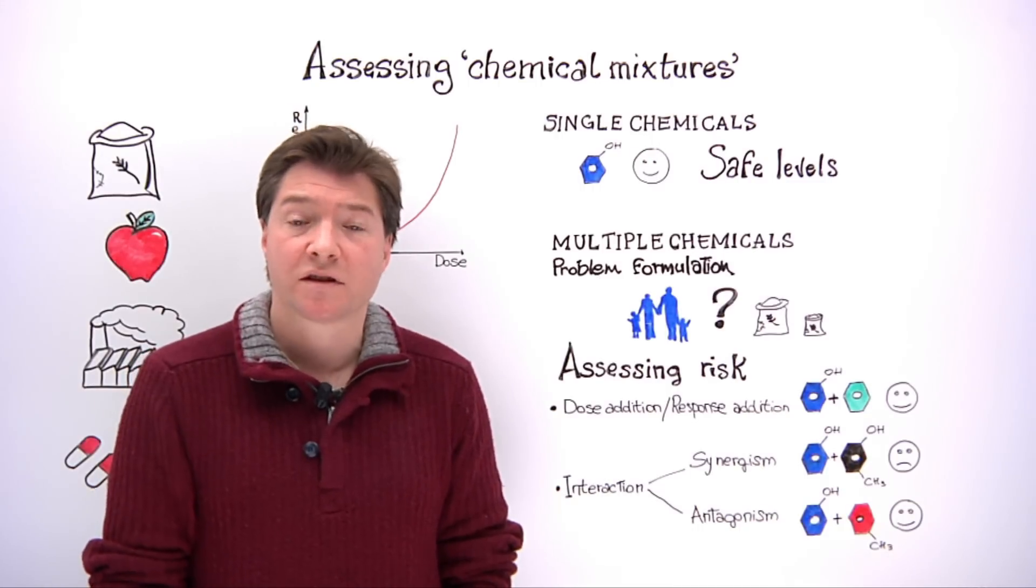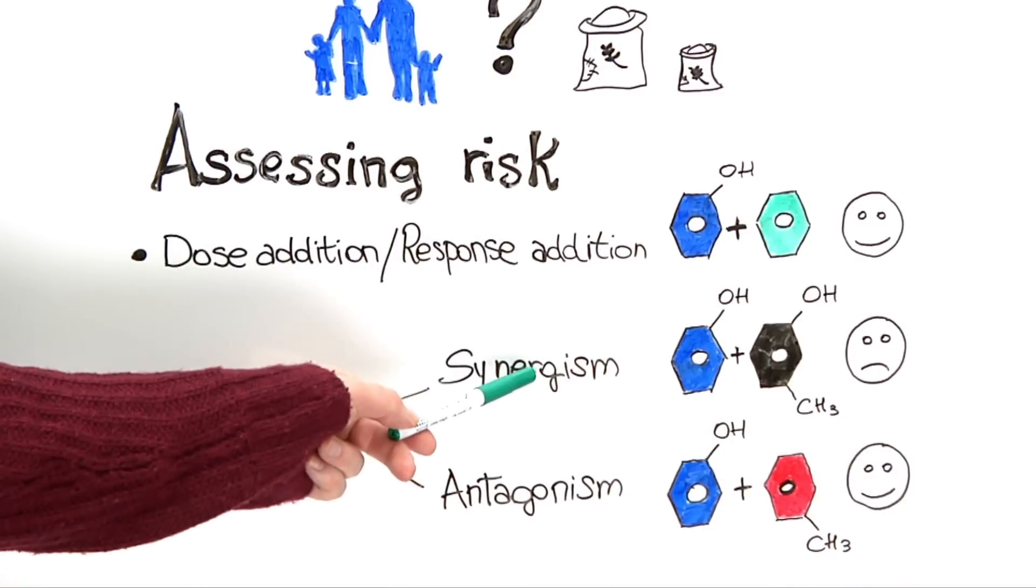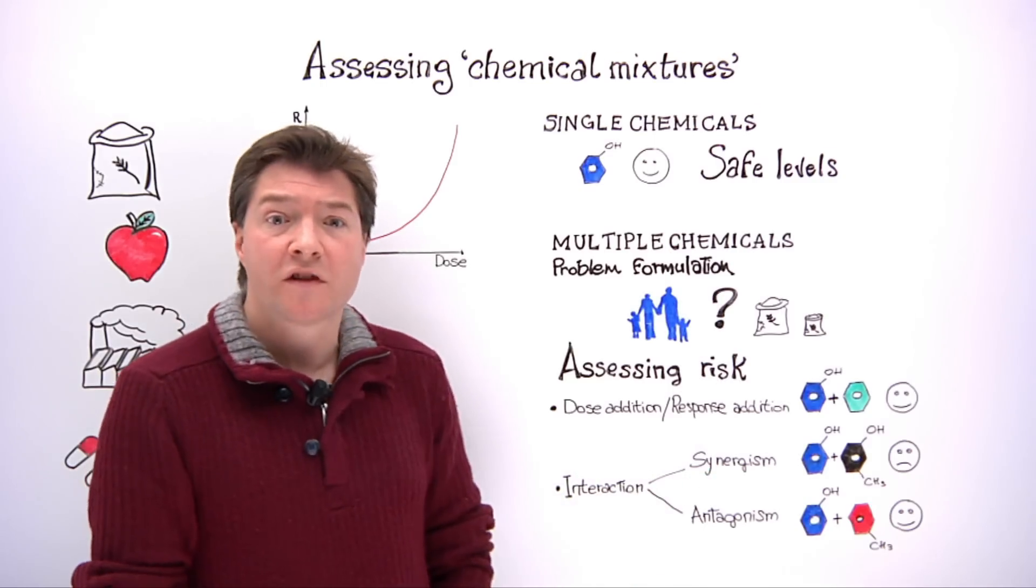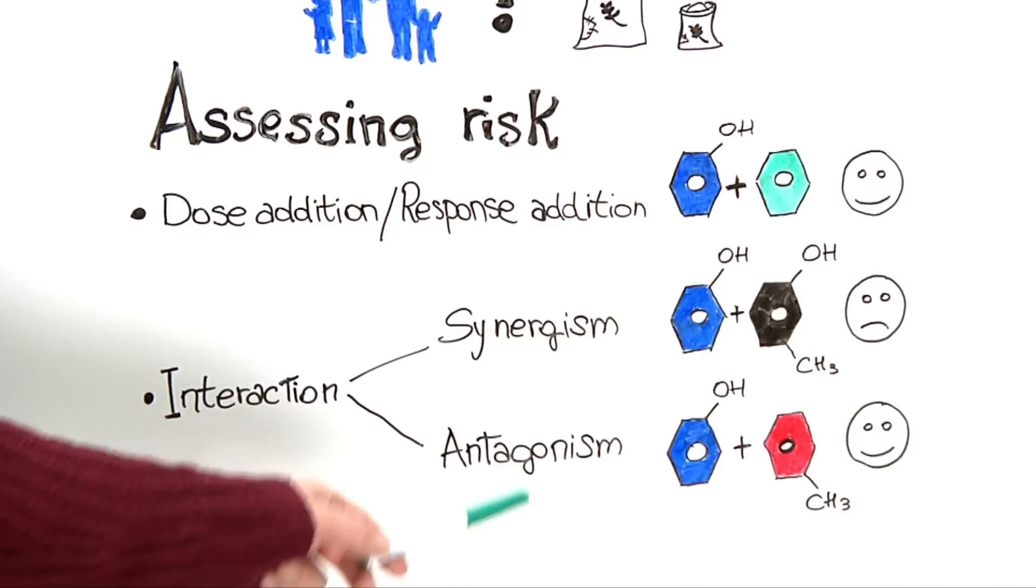Interactions are more complex. Chemicals can become more toxic when combined, which is called synergism. On the other hand, they can be less toxic when combined, which is known as antagonism.